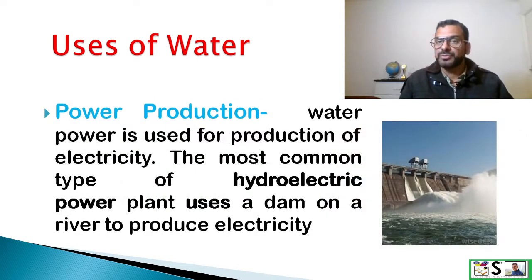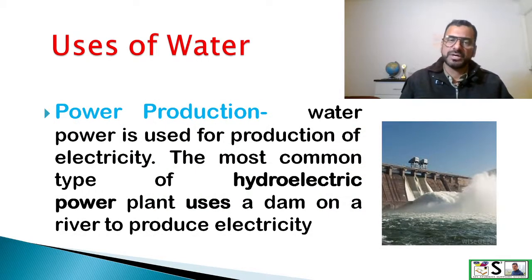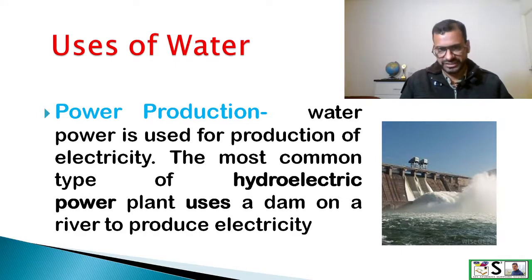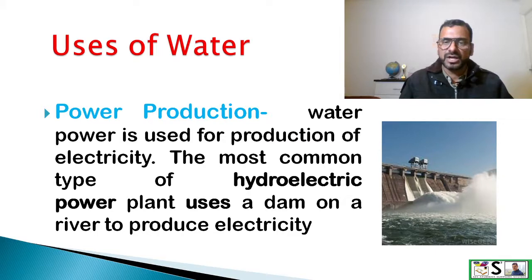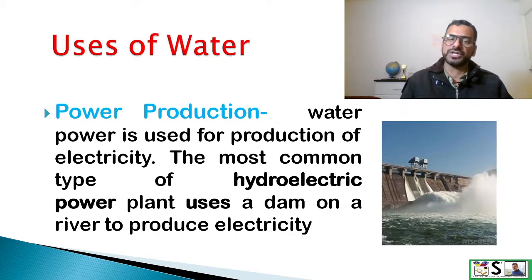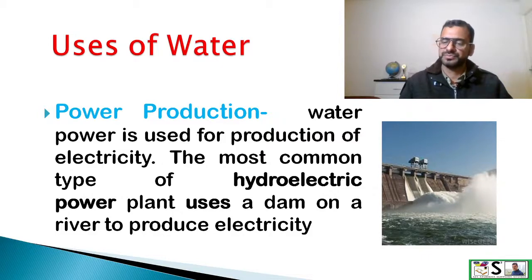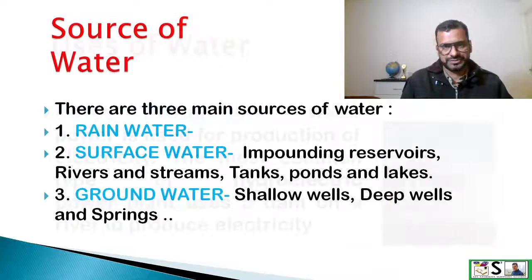Power production. Water power is used for the production of electricity. The most common type of hydroelectric power plant uses a dam on a river to produce electricity.